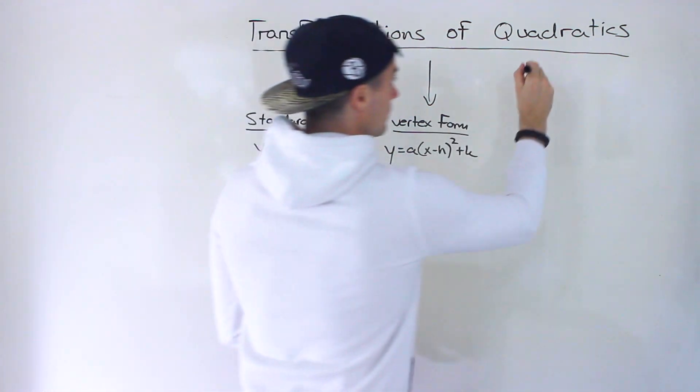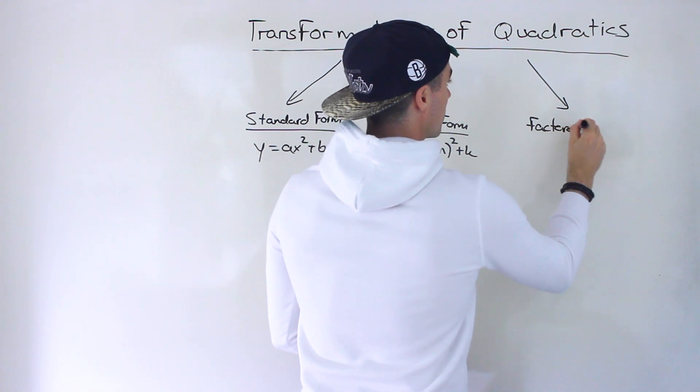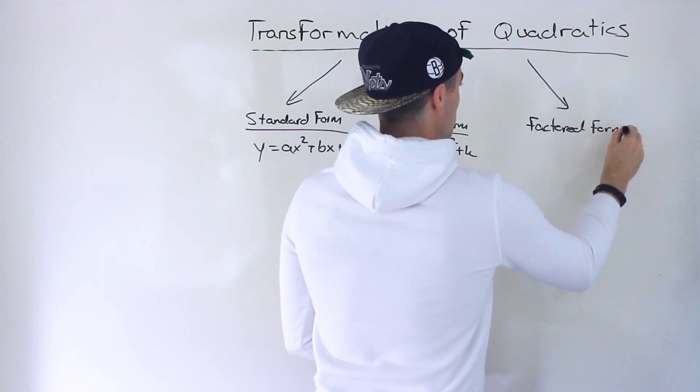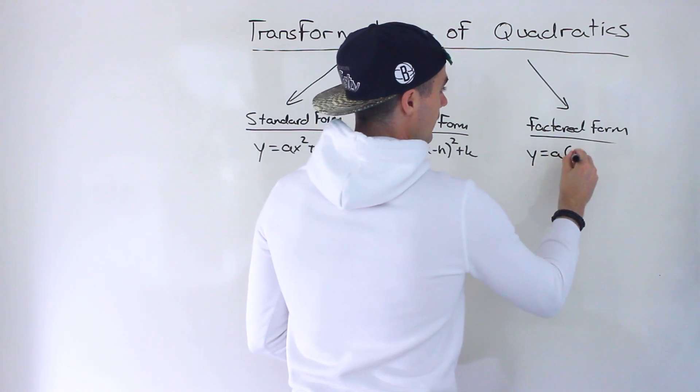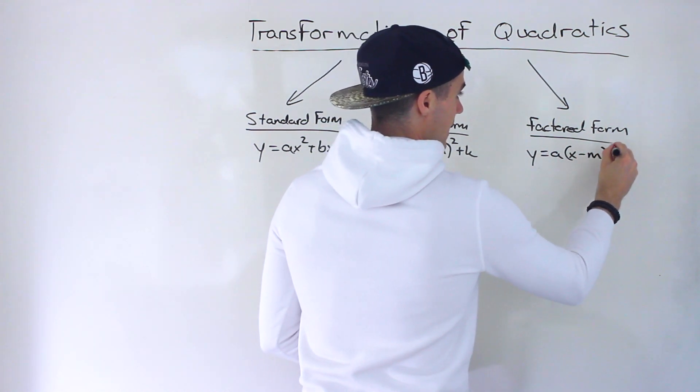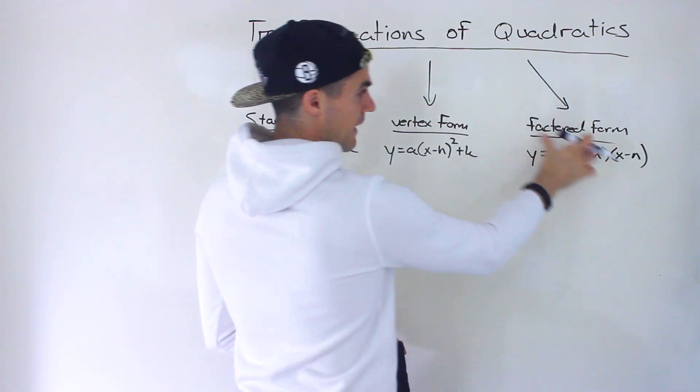And then there's another form called factored form. A quadratic that is in factored form has the format a bracket x minus m, and then x minus n. That's factored form.